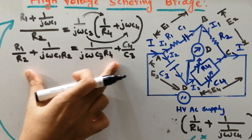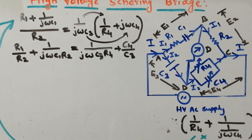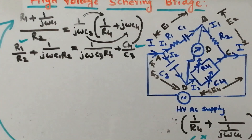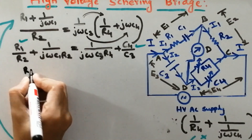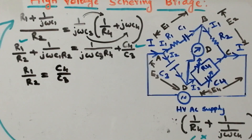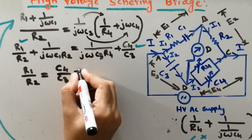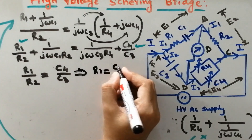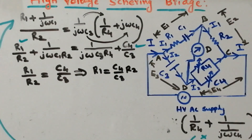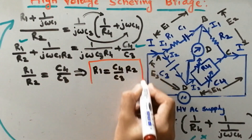Now consider this final equation. We can equate real and imaginary parts, as this is a complex number. Equating the real parts of LHS and RHS, R1 divided by R2 equals C4 divided by C3. My objective is to calculate unknown resistance and capacitance. From this equation, I can easily calculate the unknown resistance. Therefore, R1 equals C4 by C3 times R2. You can keep this equation for calculation of dielectric loss.